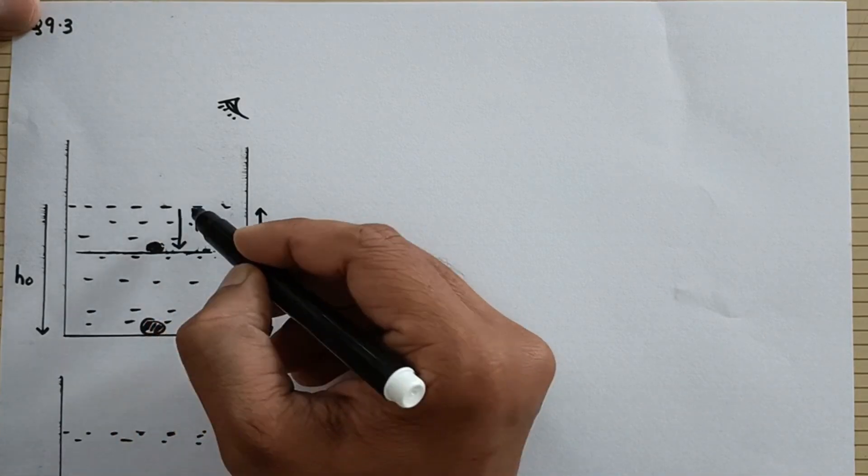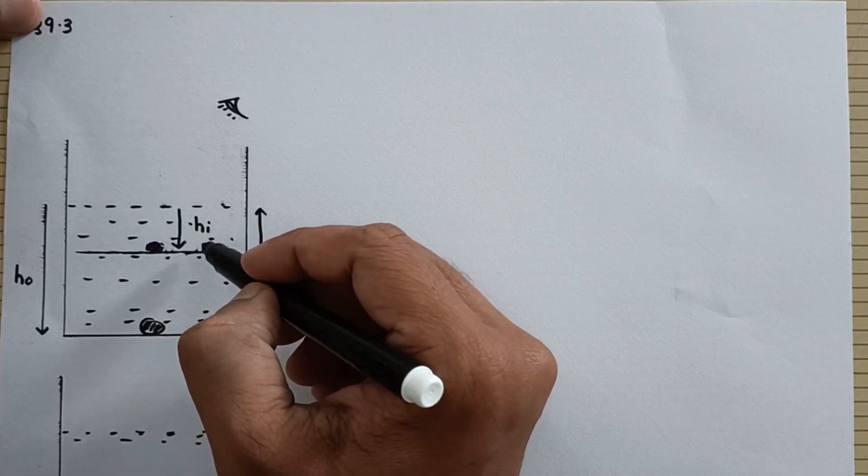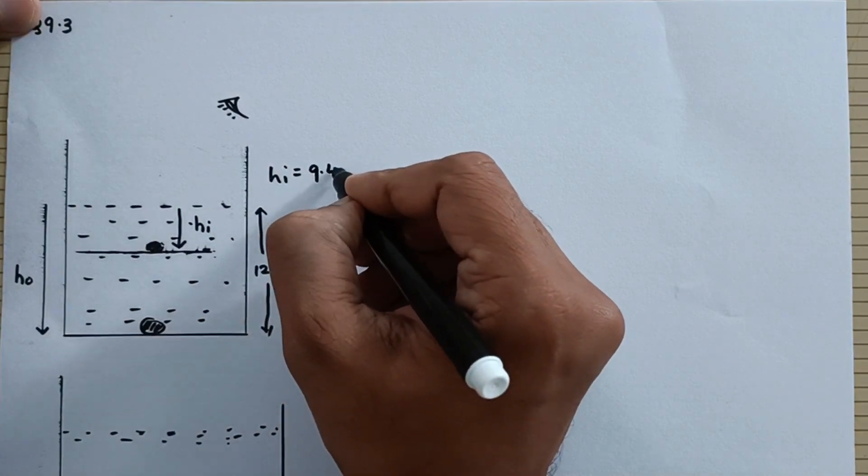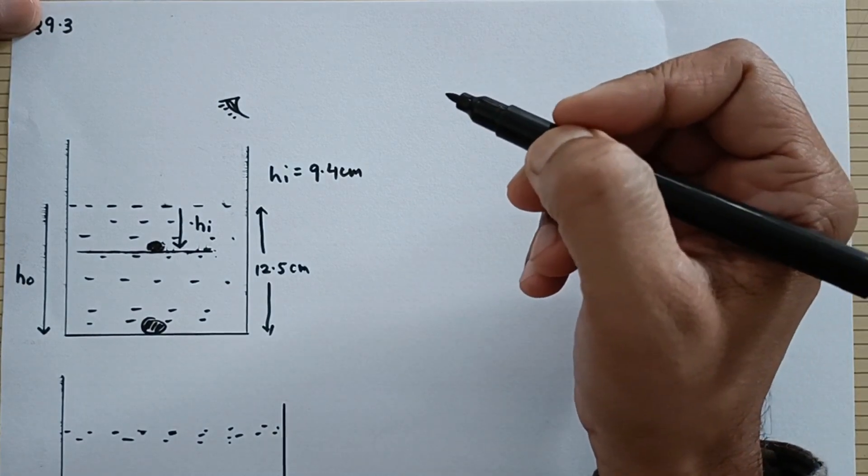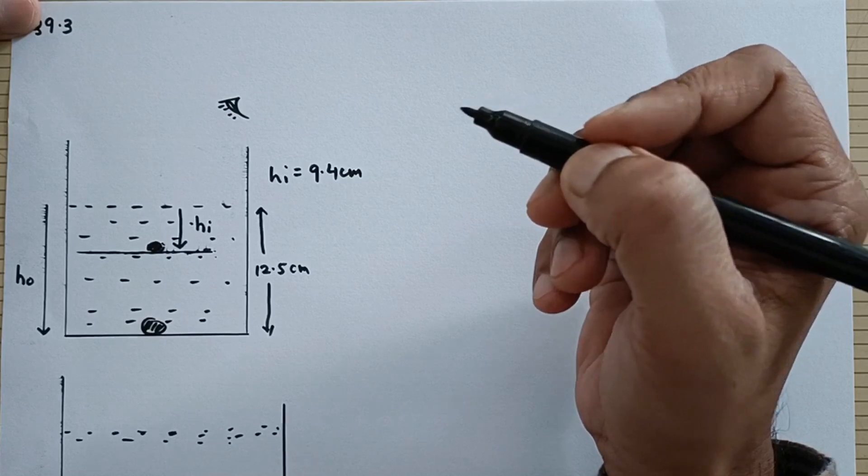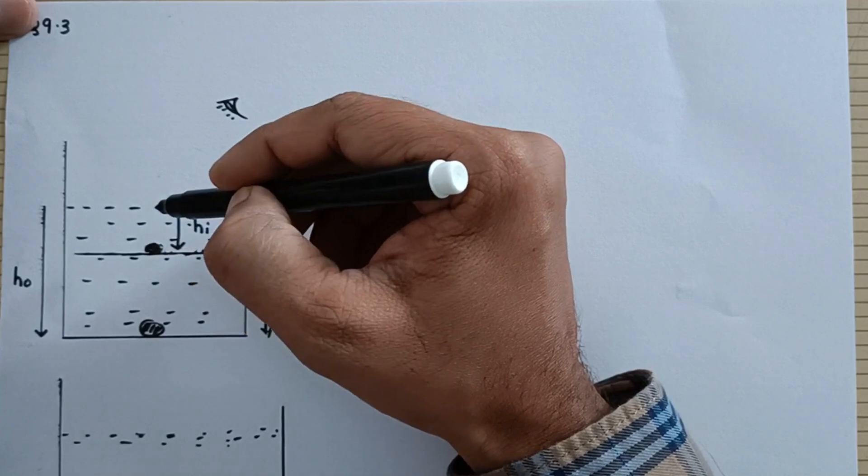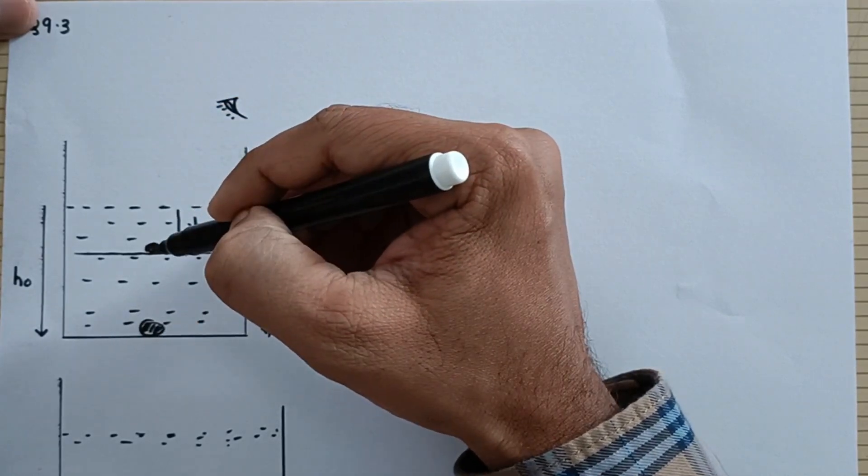Now from the top surface this depth is known as apparent depth. This is given as 9.4 centimeters and it is because they have said in the question very clearly that the apparent depth of the needle which is measured by the microscope. Of course instead of your eye you can also put the microscope and view this.